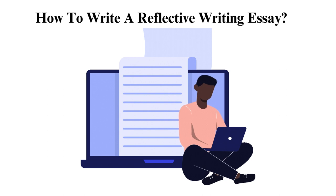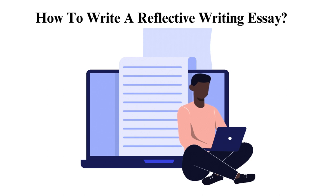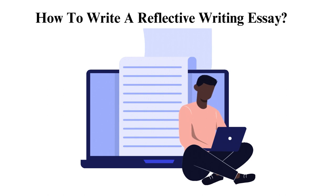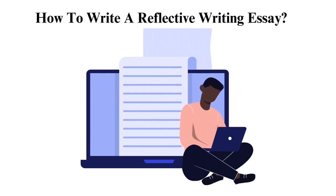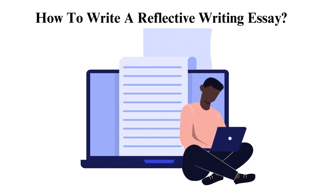Two: Reflective essay body. This section requires the most thought since it is common for students to repeat themselves or skip over important details leading to plot holes. Writing experts would advise you to write a draft in chronological order to ensure coherence. Also, include points of reflection where you analyze your actions and try to attribute them to the thesis statement and a particular theory. This can also help reveal your personality and how you cope with various life experiences.